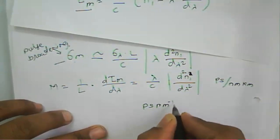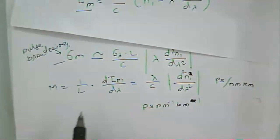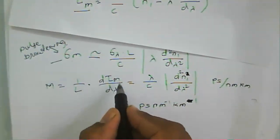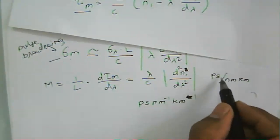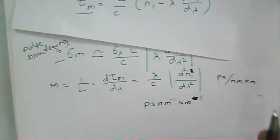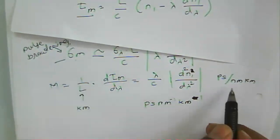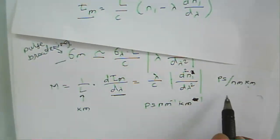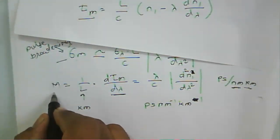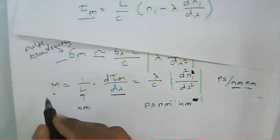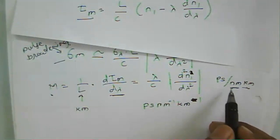The material dispersion is expressed in picoseconds per nanometer per kilometer. Per nanometer refers to the wavelength dependence, per picosecond is the pulse delay, and per kilometer refers to the fiber length. So M depends on both the length of the fiber and the wavelength.